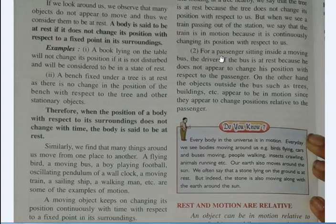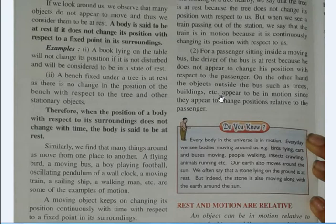For a passenger sitting inside a moving bus, the driver of the bus is at rest because he does not appear to change his position with respect to the passenger. On the other hand, the objects outside the bus such as trees and buildings appear to move, since they appear to change positions relative to the passenger. If you have gone through a train journey, you will notice that poles and trees appear to be moving.